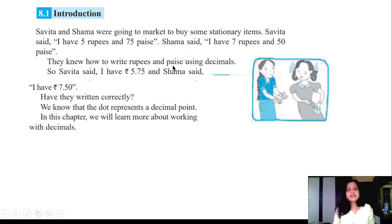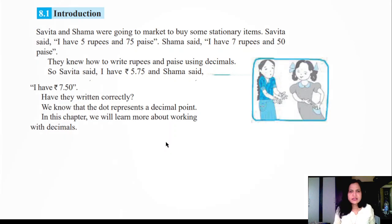They knew how to write the rupees and paise using decimals. So they have written 5.75 and Shama said I have 7.50. They have written correctly. Now we know that dot represents the decimal point. In this chapter we will learn more about working with decimals.